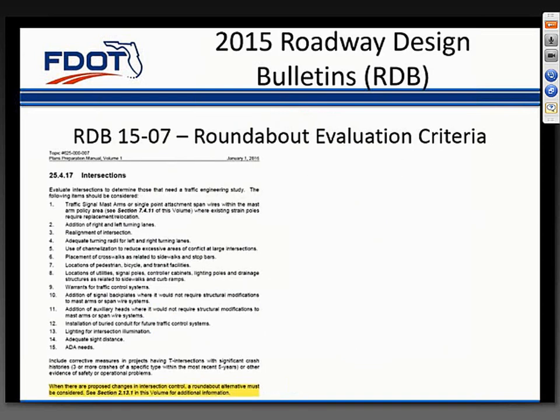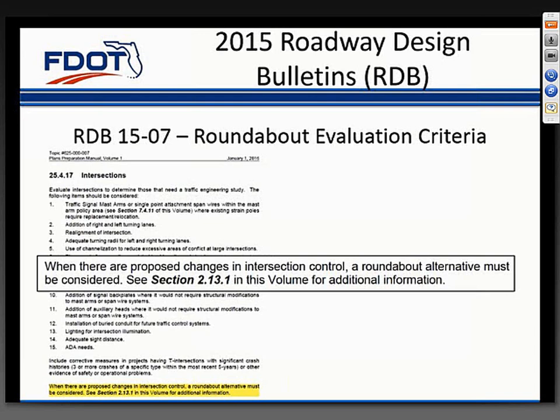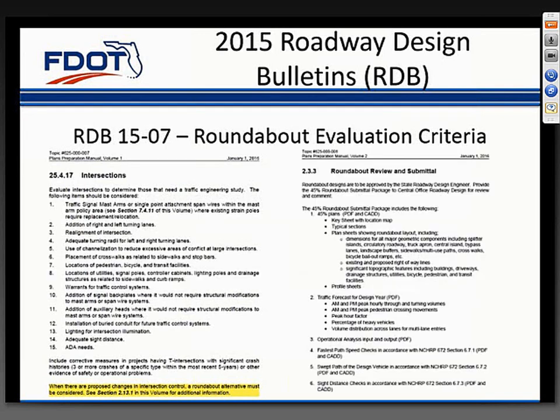Roadway Design Bulletin 1507 established a process to satisfy the roundabout evaluation requirement. This can be found in a couple of locations within the PPM. In Chapter 25 of Volume 1, the 3R chapter, Section 25.4.17 states that when you have proposed changes in intersection control, you'll have to consider a roundabout alternative. This is discussed in more detail in Chapter 2 of Volume 2. Section 2.3.3 of Volume 2 identifies the items to include in your roundabout submittal package. This is called a 45% submittal package because it needs to occur between 30% and 60% plans—it's not an additional full plan submittal, but comparable to turning in a typical section package.